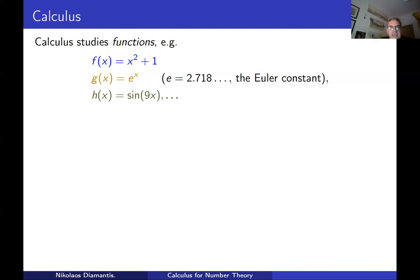So keep that in mind. E is a number you can think of roughly 2.718, but in reality it is a more complicated number. H of x is something also familiar. You may have seen it, also very useful for engineering, for optics, for all kinds of things. And it is defined like that: the sine, trigonometric function, sine of 9 times x. And we can have infinitely many examples of such functions. This is one of the main objects of calculus.